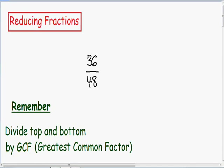So in our numerator we have a 36, and in the denominator we have a 48. The biggest number that can be divided evenly with these two numbers is 12, because 36 divided by 12 is 3, and 48 divided by 12 is 4. So I'm going to divide the top and bottom by the greatest common factor, which is 12.